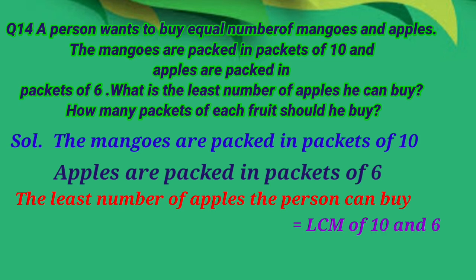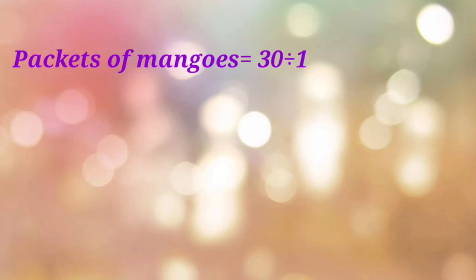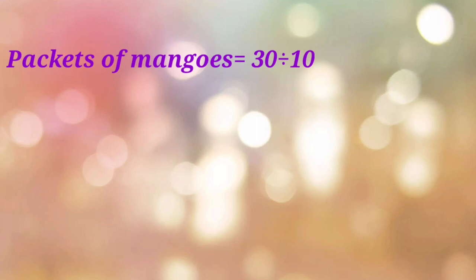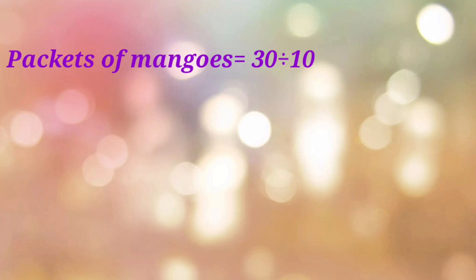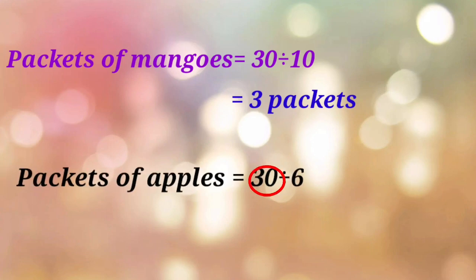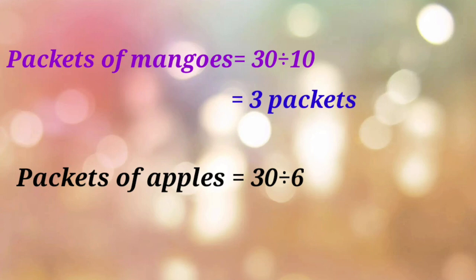The LCM of 10 and 6 is 30. So 30 is the least number of apples or mangoes the person can buy. For the number of mango packets, we divide the LCM by the number of mangoes in one packet: 30 divided by 10 gives 3 packets. Similarly for apple packets, 30 divided by 6 gives 5 packets.